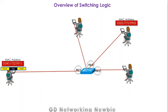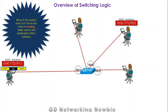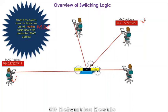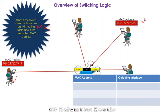Now, what happens if the switch doesn't have an entry in the MAC table for the destination? The source node generates a frame and sends it to the switch. The switch again consults its MAC table to see where to forward that frame. At this moment, there is nothing in that table — it is empty.